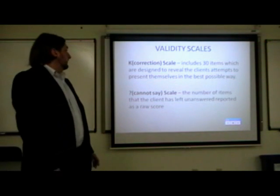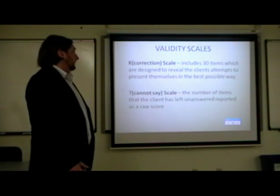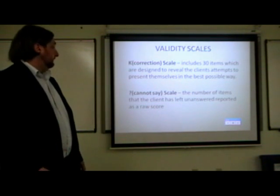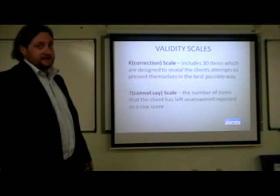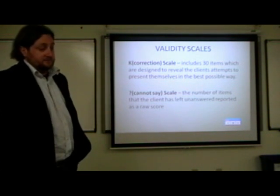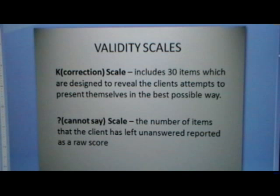The next scale is the K scale, or correction scale, designed to reveal the client's attempts to present themselves in the best possible way, or 'faking good.' The question mark scale, or cannot say scale, is simply the number of questions left unanswered. If you left a bunch of things blank, that would invalidate it. Or if you answered randomly, the F scale score would be really, really high, so we'd know it was invalidated.